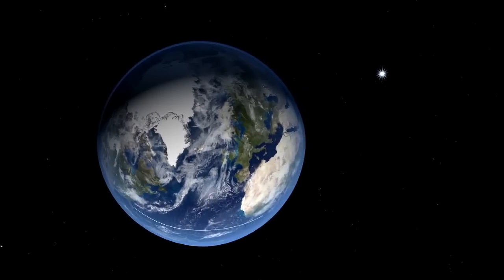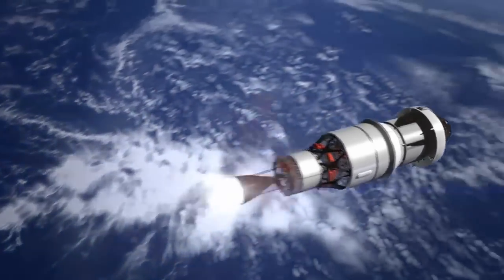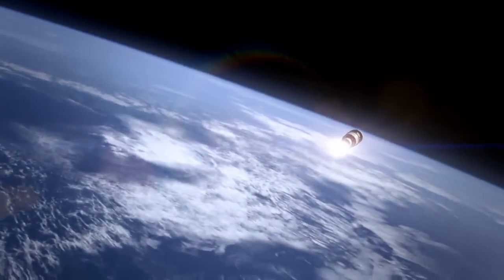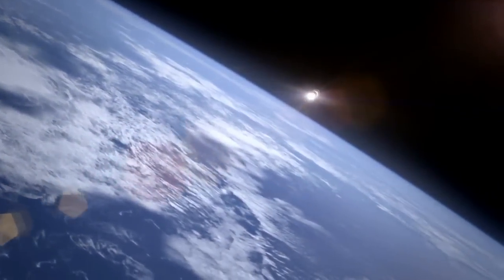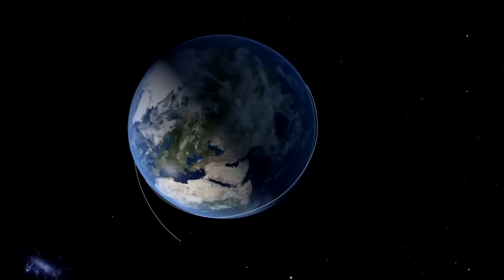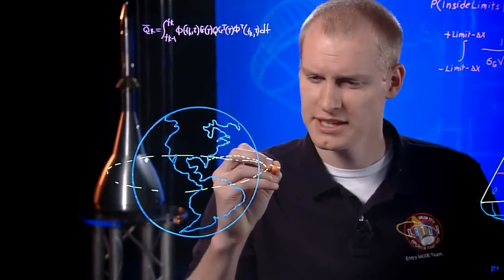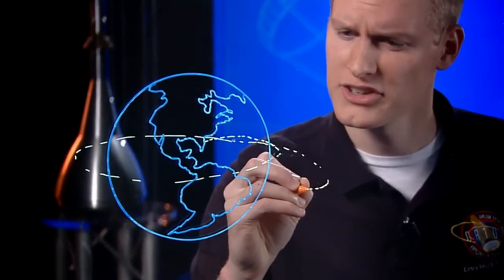Imagine you are traveling with Orion as the flight test continues. One orbit completed. Time to go. The upper stage of the rocket fires again. Like the setup for a roller coaster ride, this is the big climb we've been waiting for. We are headed 3,600 miles above Earth, 15 times higher from the planet than the International Space Station.